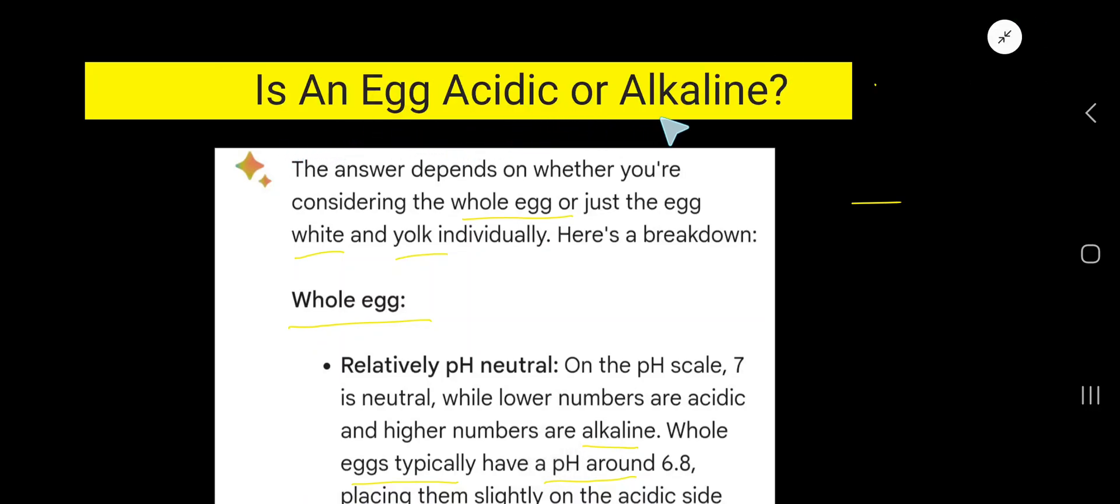Is an egg acidic or alkaline? The answer is the whole egg is considered slightly acidic or close to neutral. Let me explain this elaborately. The answer depends on whether you are considering the whole egg or...